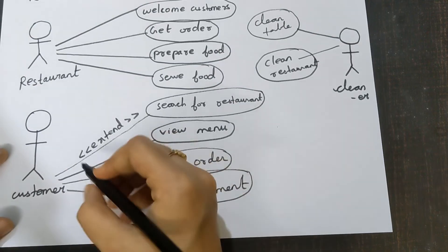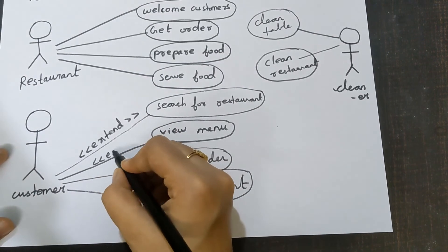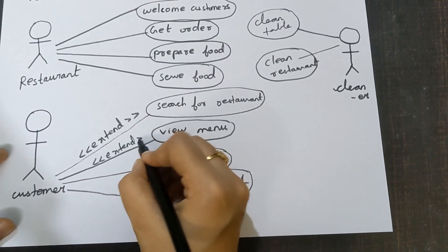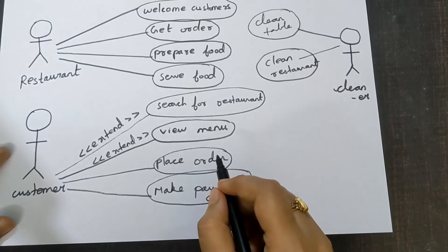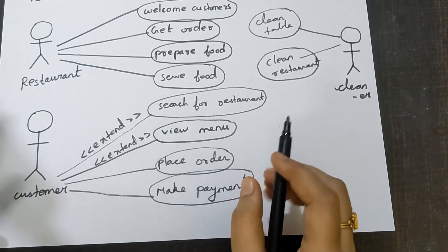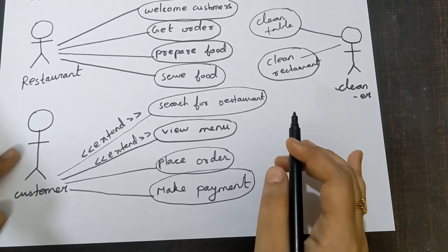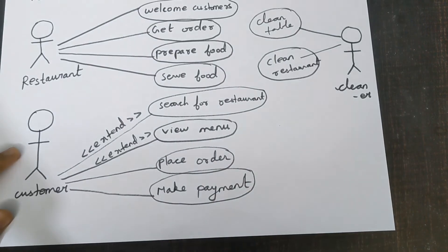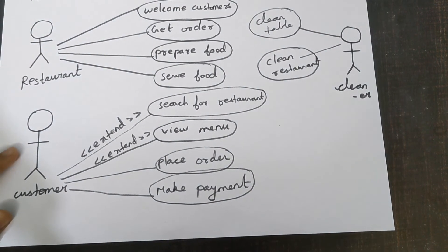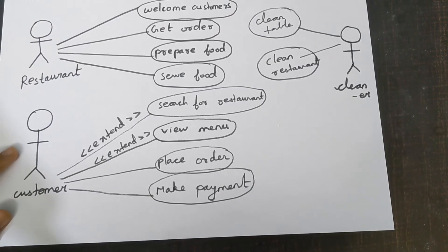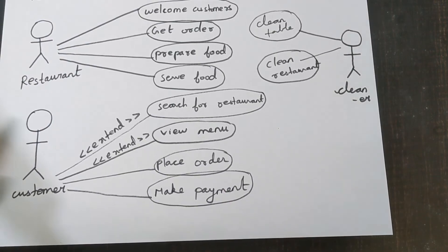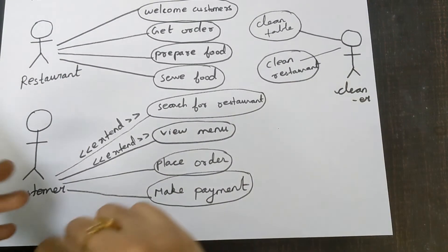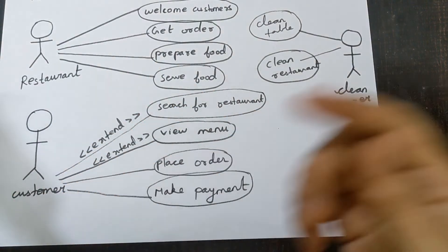Next, view menu — this is also extend, meaning it is also not mandatory. Some items are very general and will be there in all restaurants. For example, if you want to drink a coffee and you go to that restaurant, you will directly ask for coffee without looking into the menu first.